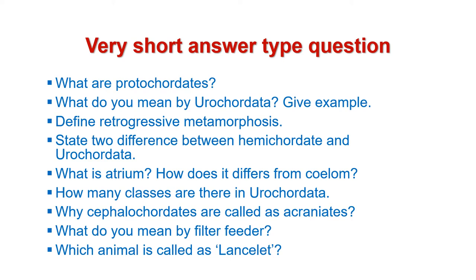Next is: state two differences between Hemicordata and Urocordata. Next is: what is Atrium? How does it differ from Coelom? Next is: how many classes are there in Urocordata? Next is: why are Cephalocordates called Acraniates? Next is: what do you mean by Filter Feeder? And next is: which animal is called a Lancelet?